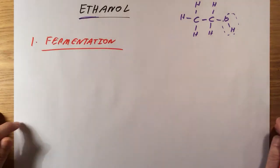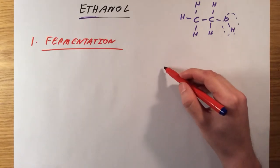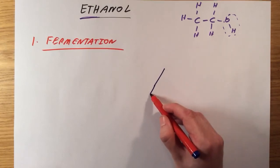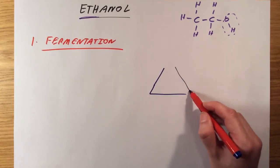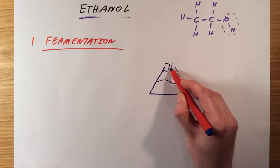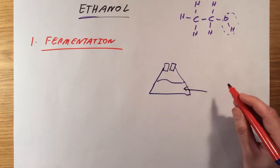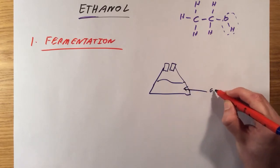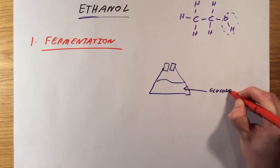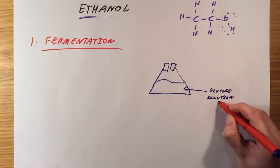Fermentation uses a biological catalyst in the form of yeast to turn glucose or sugar into ethanol. Dead simple to do. All you need to do is get yourself some form of conical flask. In the bottom, you want to put some glucose solution.